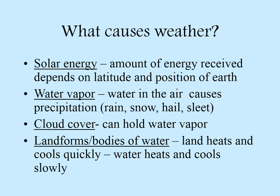What causes weather? Solar energy, water vapor, cloud cover, and different landforms and bodies of water. Solar energy depends on where you're at on the Earth — your latitude and the position of the Earth at that point in time. Water vapor is how much water is in the air; if there's a lot, you may have precipitation — rain, snow, whatever. Cloud cover can help keep water vapor in a spot where it can turn into precipitation. The closer you are to oceans, you'll usually have more precipitation, but if you're way inland or on the leeward side of mountains, you're going to struggle for precipitation.